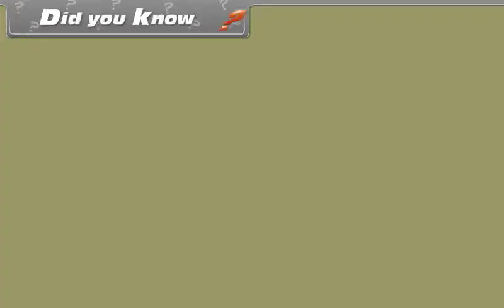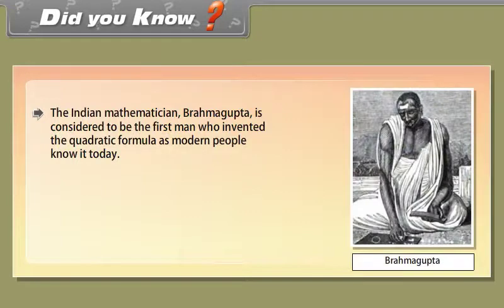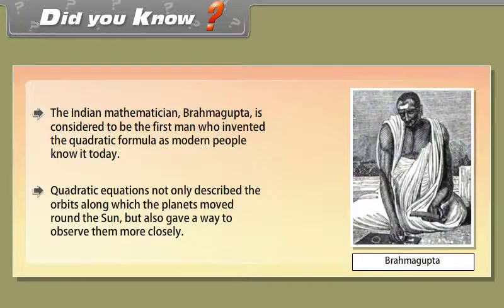Did you know? The Indian mathematician Brahmagupta is considered to be the first man who invented the quadratic formula as modern people know it today. Quadratic equations not only describe the orbits along which the planets moved around the sun, but also gave a way to observe them more closely.